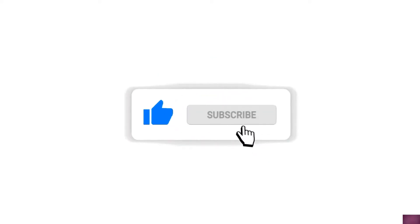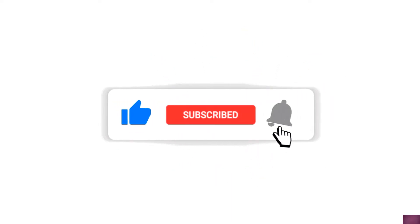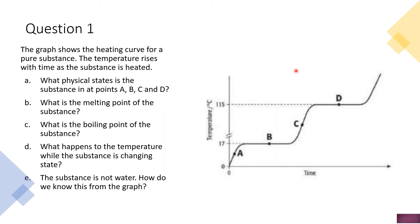Now let's get into the question. Question 1: the graph shows the heating curve for a pure substance. The temperature rises with time as the substance is heated. The y-axis is the temperature, the x-axis is the time, and in this graph they have marked four points: A, B, C and D.